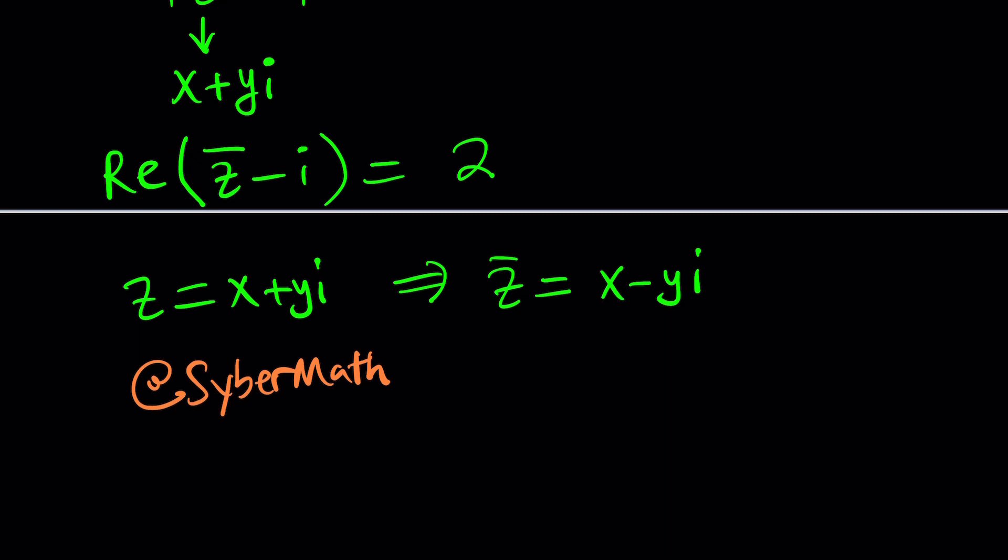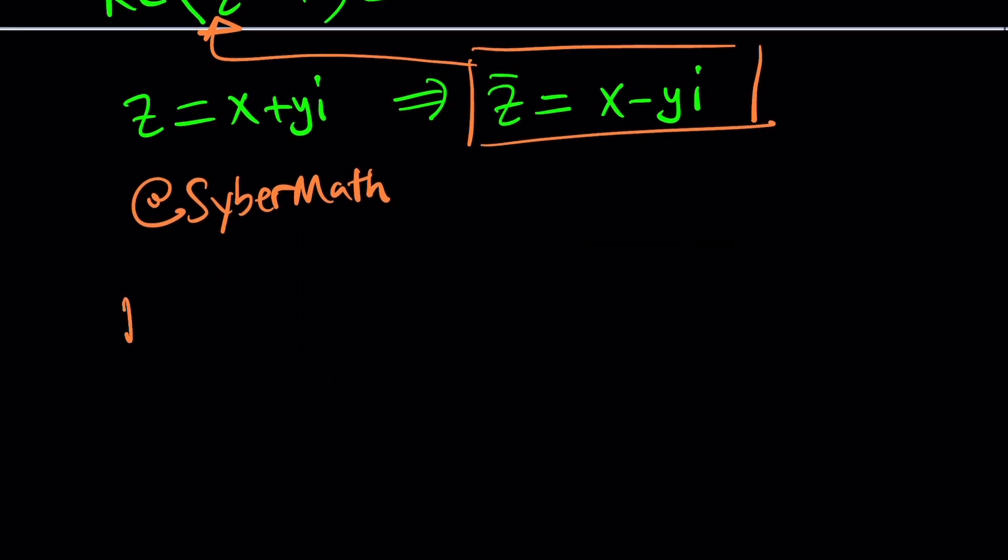Great. So let's go ahead and substitute this into our equation. That gives us the real part of x minus yi minus i equals 2. Now what does the real part mean or re mean? Re means the real part. im means the imaginary part.